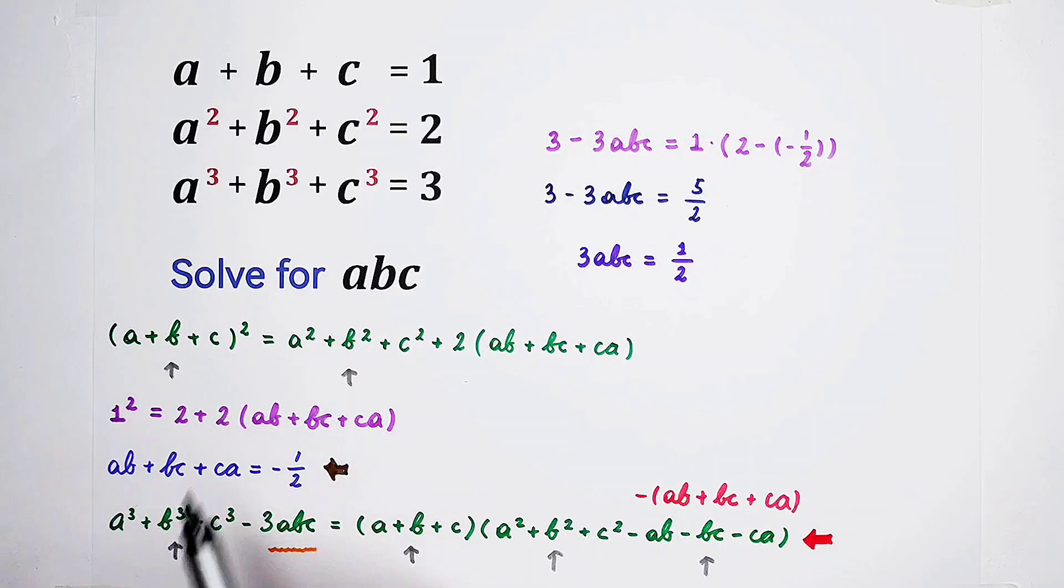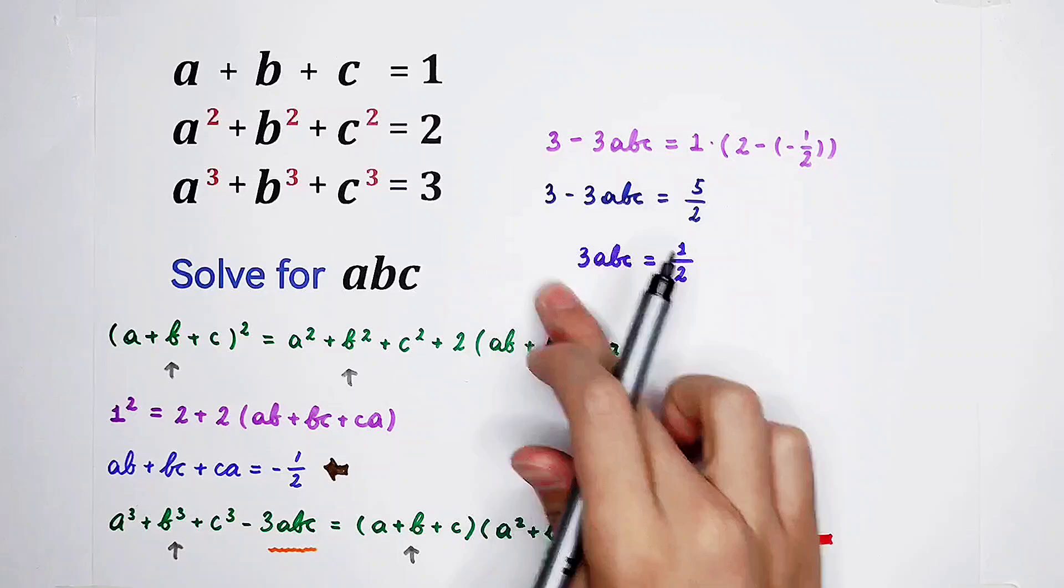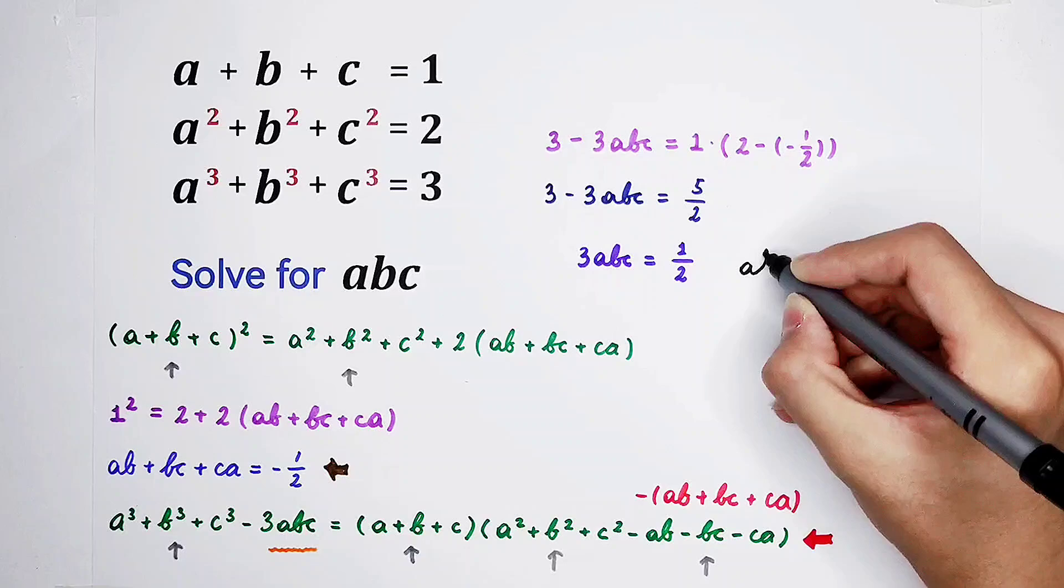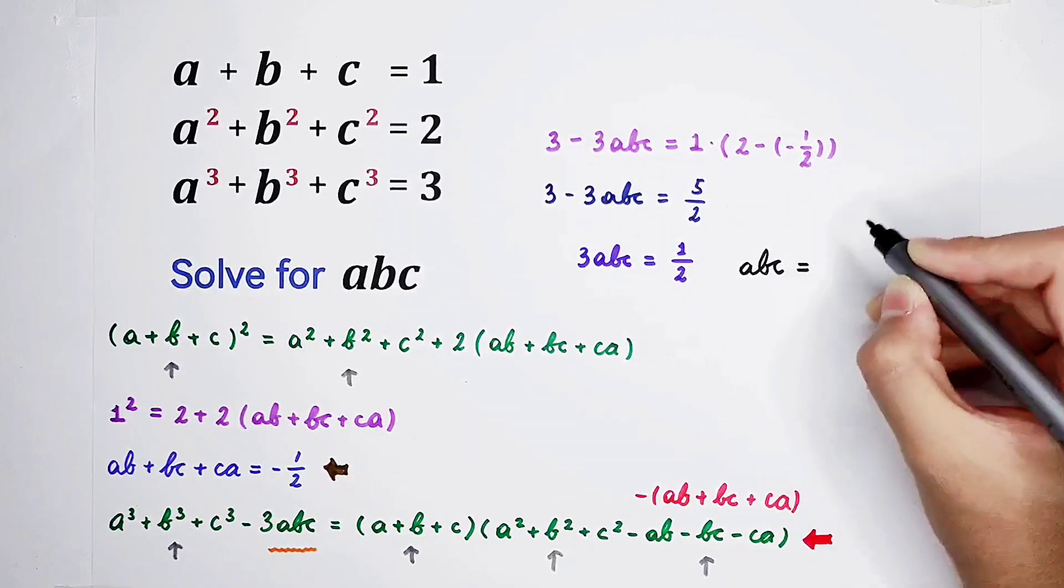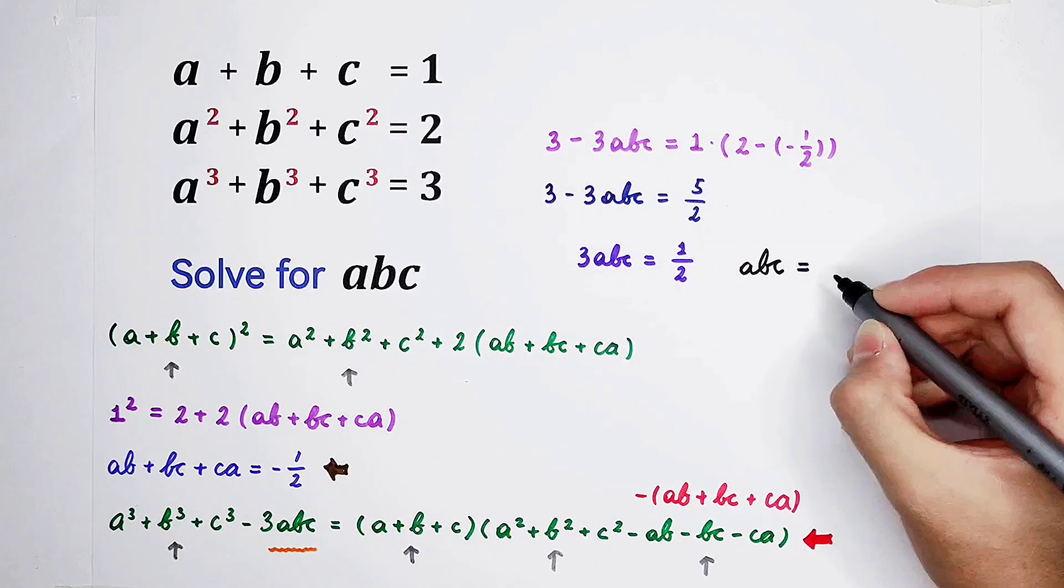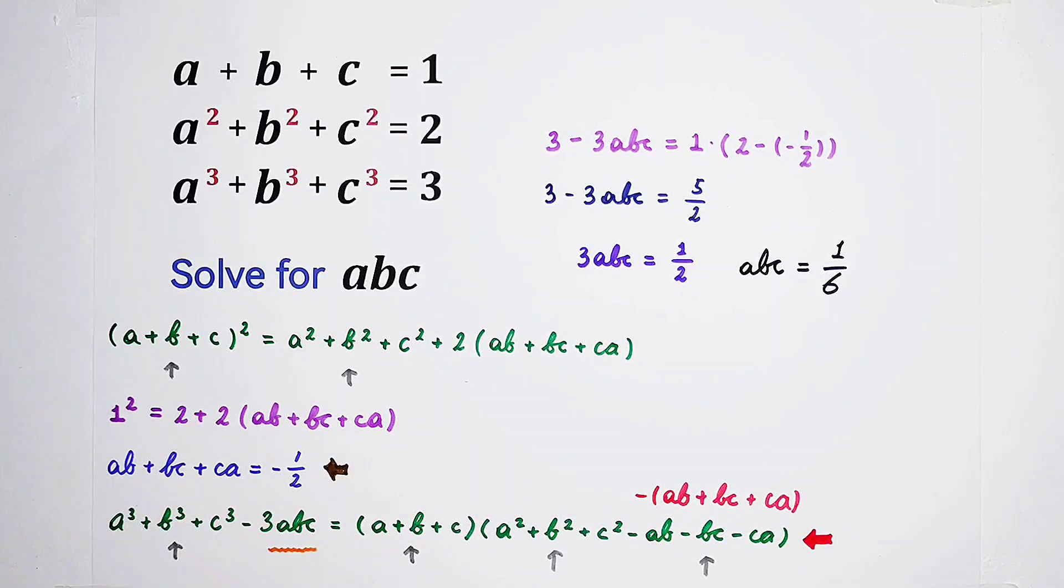We're going to solve for the value of a times b times c. And this equation, this simple equation about ABC, has already been solved. So, the value of a times b times c is equal to 1 over 2 divided by 3, which is 1 over 6. That's the answer. Don't forget to give me a thumbs up. Subscribe to me for more videos. See you next time.